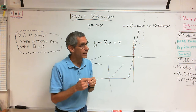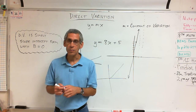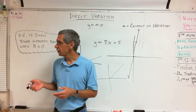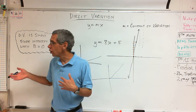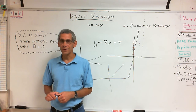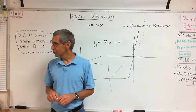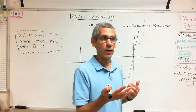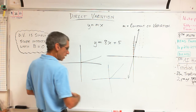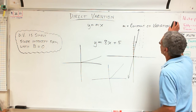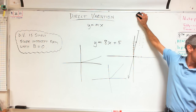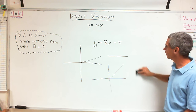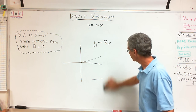A little hint: whenever you see 'per,' that's immediately Y equals MX. If it's $10 per student, that's 10 times the number of students — it's going to vary depending on how many students. Everybody understands direct variation now, right? It's not that hard. The way the book describes it makes it seem so complicated.